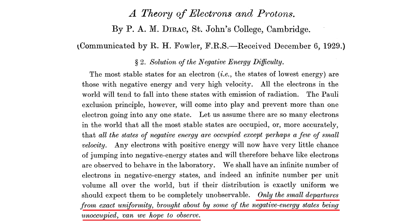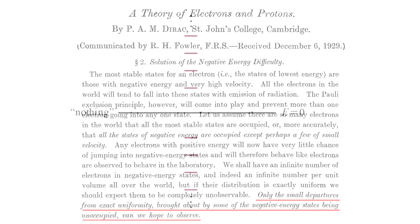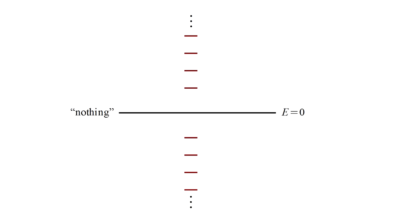Dirac went on to suggest that these unoccupied negative energy states might actually be protons. So Dirac says, yes, there are an infinite number of negative energy electron states. But they're all full. And the infinite number of electrons that fill them are invisible. They have no observable effect.